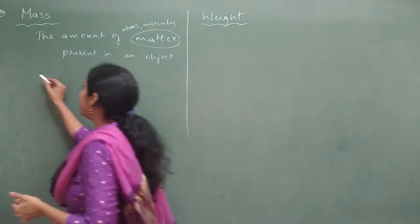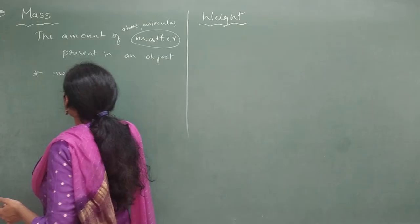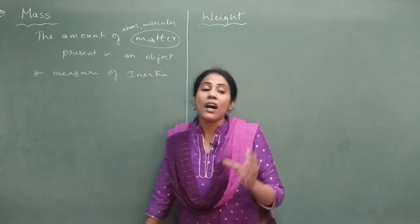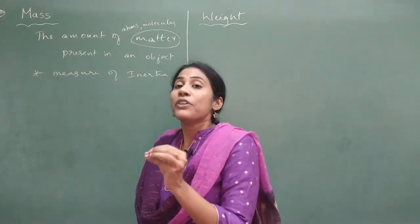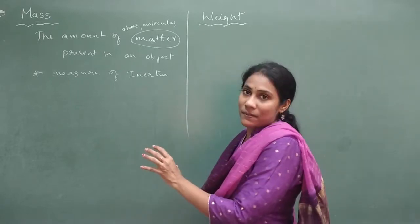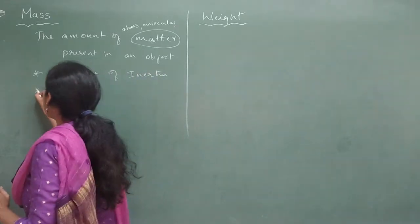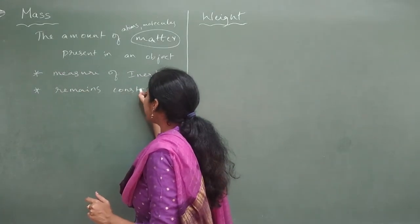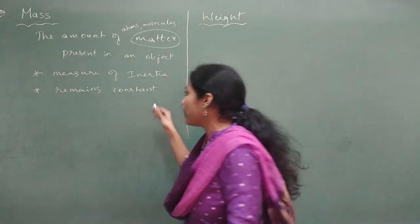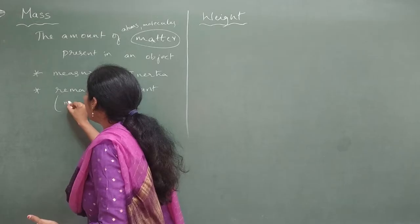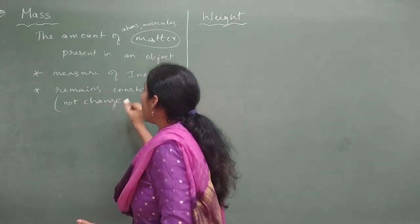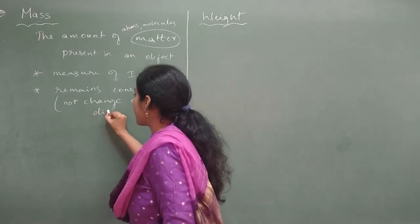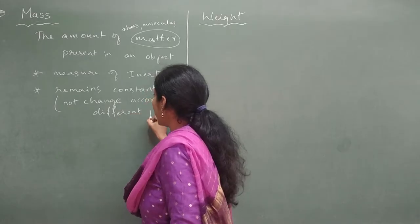I can also tell it in another way: mass is nothing but it is a measure of inertia. So how much inertia a particular object has — that is what we mean by mass. And remember, this mass remains constant. It will not change according to place, it will not change according to different locations.